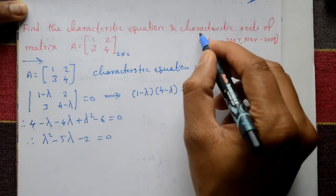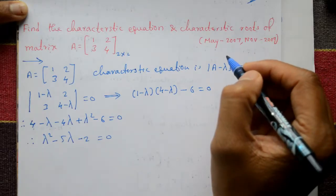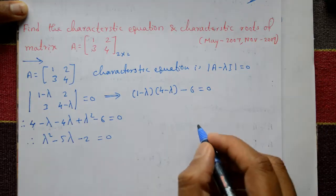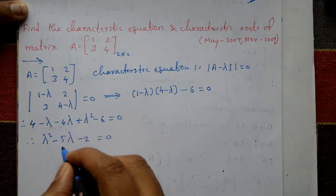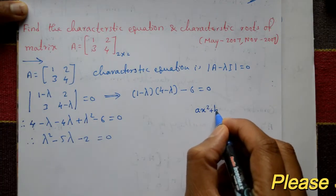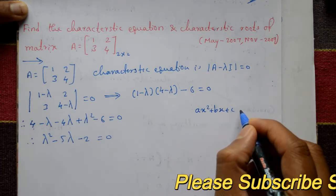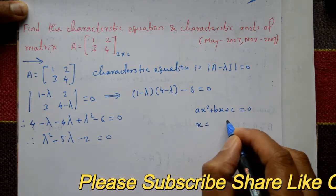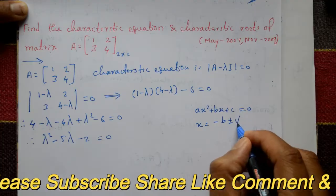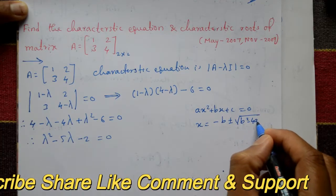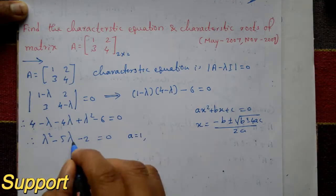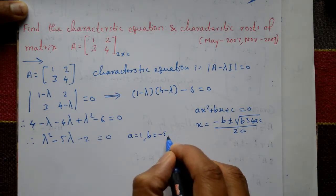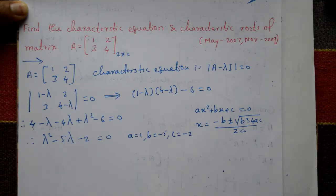This is the characteristic equation. Next, we find the characteristic roots. This is a quadratic equation. Using the general quadratic formula: for ax² + bx + c = 0, x equals minus b plus or minus square root of (b squared minus 4ac) divided by 2a. In this equation, a equals 1, b equals minus 5, and c equals minus 2.